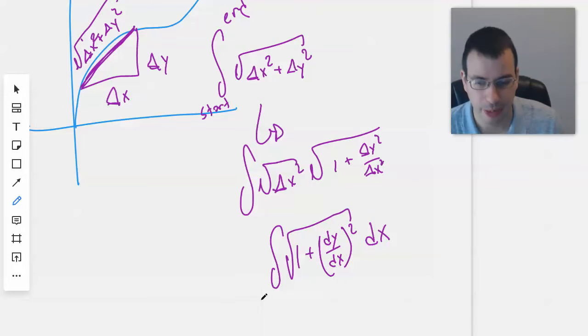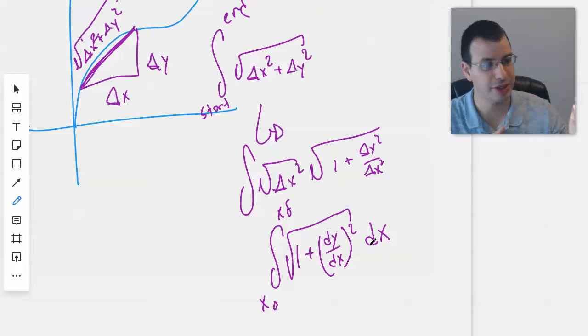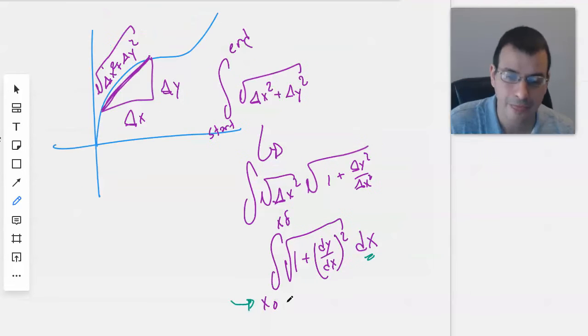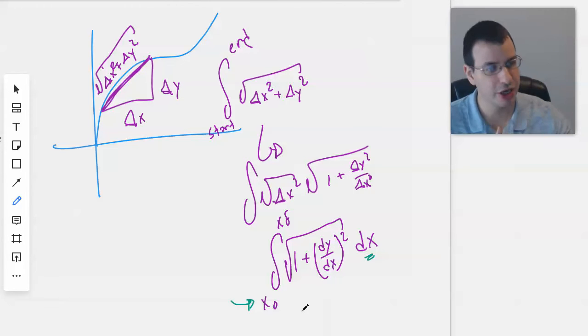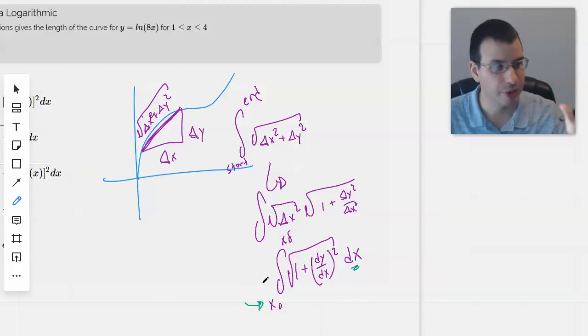And then we'll do this from beginning x value to the final x value. Because we're integrating with respect to x, it shows that our limits of integration are going to be with respect to x. So I'll start with the first x and go to the last x. And this is the formula for integrating for an arc length. This isn't a formal proof, but it's a pretty good mnemonic that kind of sort of follows the idea of the way it actually is done.